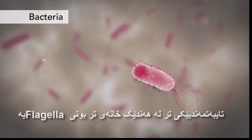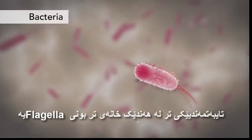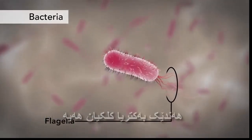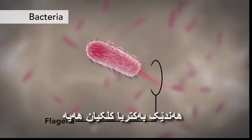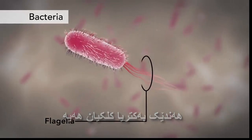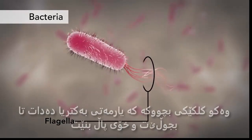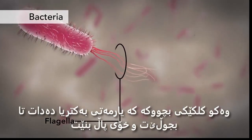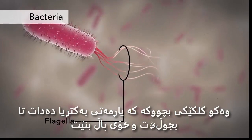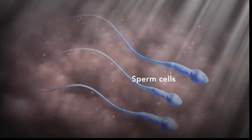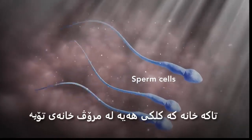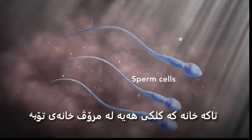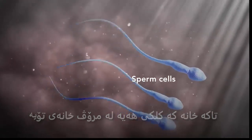Another unique feature in some cells is flagella. Some bacteria have flagella. A flagellum is like a little tail that can help a cell move or propel itself. The only human cell that has a flagellum is a sperm cell.